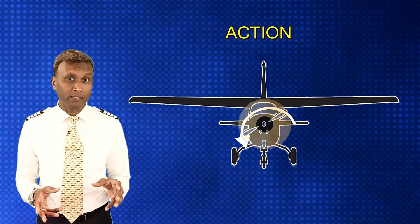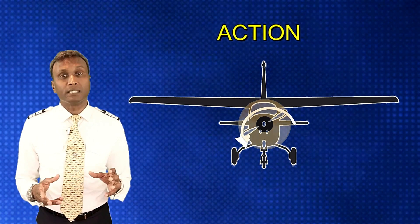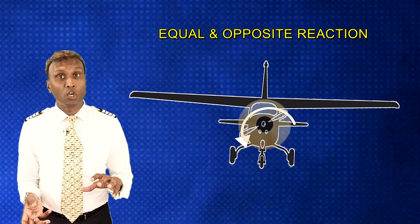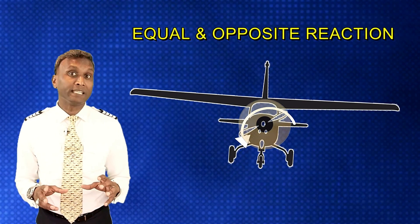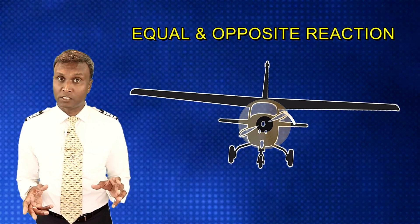Engine torque is most noticeable during the takeoff roll. As the engine powers up and the propeller starts spinning, the aircraft experiences a yawing motion, caused by torque created by the rotation of the engine and propeller. In accordance with Newton's third law of motion — which states that for every action there is an equal and opposite reaction — as the engine and propeller rotate clockwise when viewed from the cockpit, the aircraft reacts by the fuselage rolling to the left.